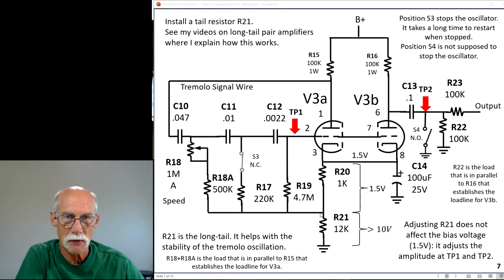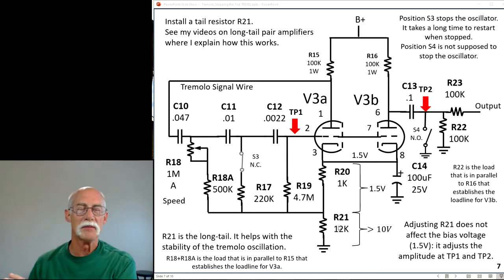This tail resistor actually elevates this reference point 10 volts above ground. This is going to make the oscillator more stable. In those other two videos on long tail pairs, I go more into that, but this is what we want to do.